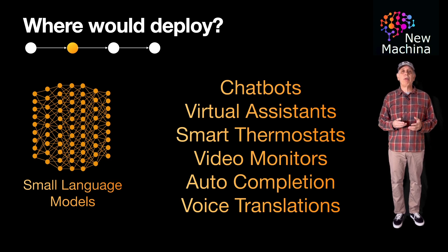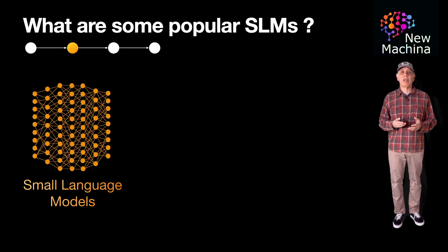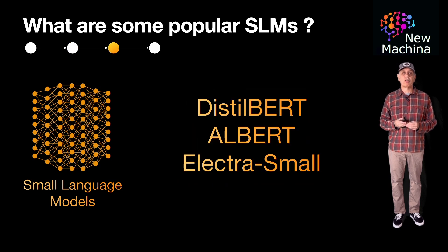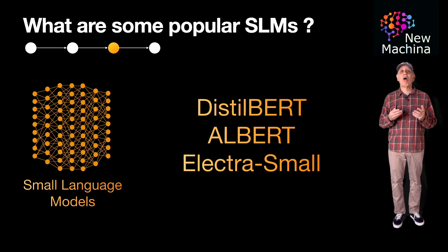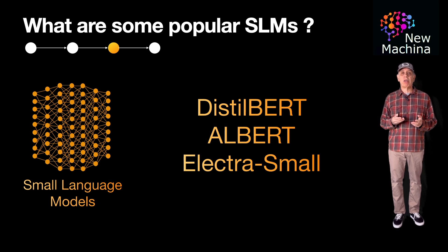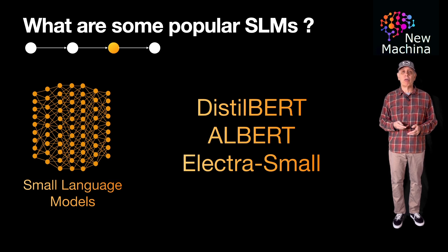This is by no means an exhaustive list, but here are a few popular small language models available on the market. DistilBERT has 82 million parameters. ALBERT, developed by Google, has 12 million parameters. ElectraSmall, also from Google, comes in at 14.5 million parameters.